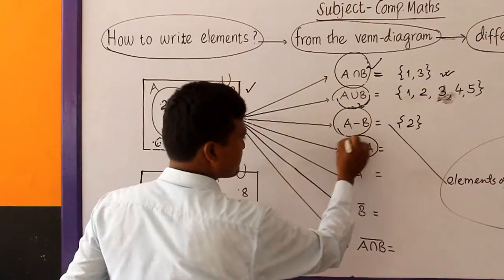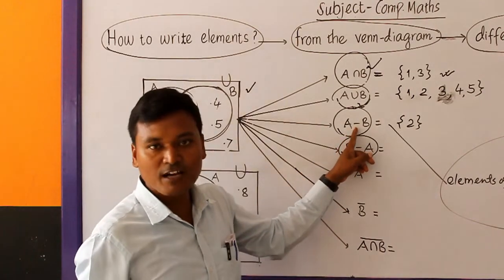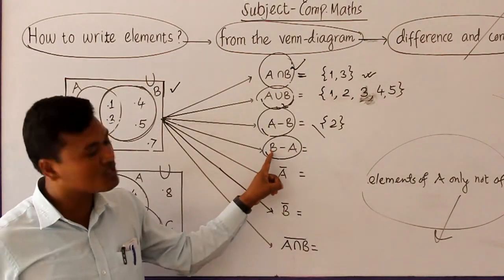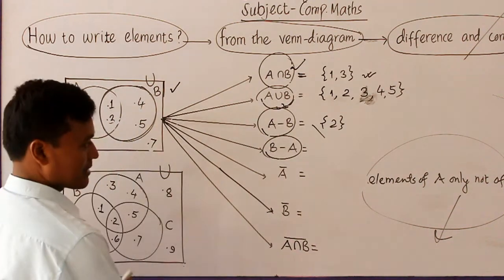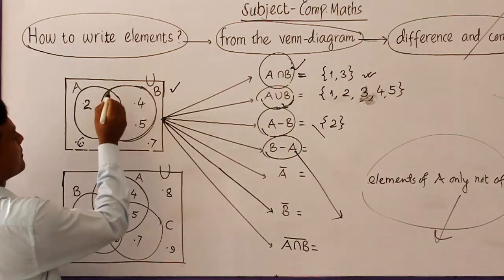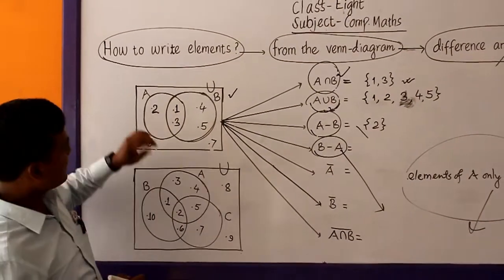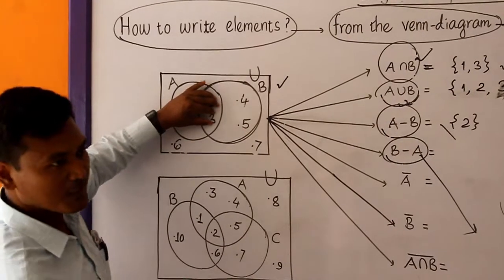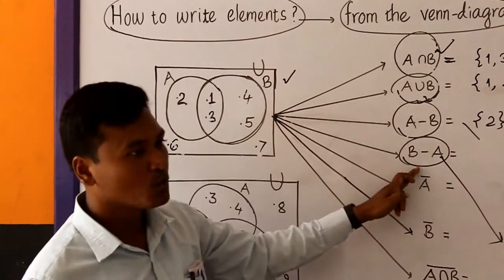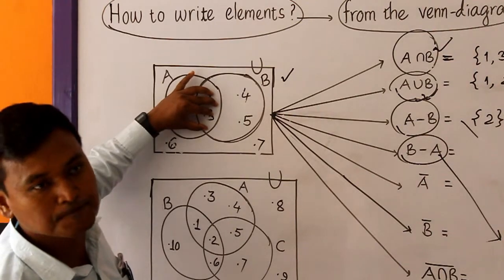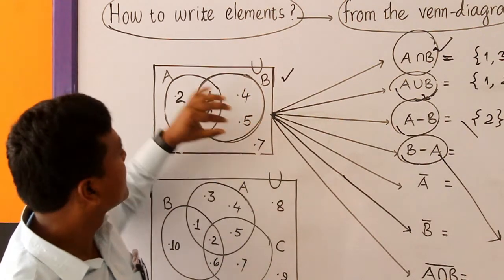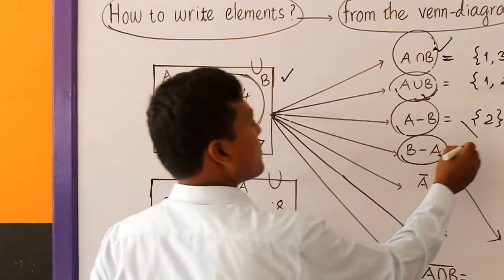Similarly, let us talk about B difference A. B difference A means we write elements of B only, not of A. Elements of A are 1, 2, and 3 — these cannot be written. The remaining elements of B are 4 and 5. B difference A means we write the remaining elements of B only, not of A. So 4 and 5 are elements of B only, not of A. B difference A is 4 and 5.